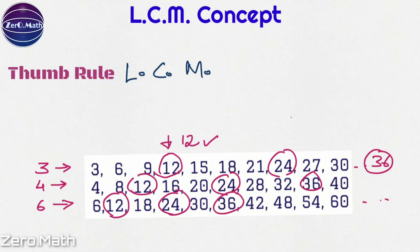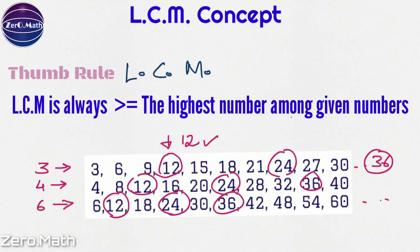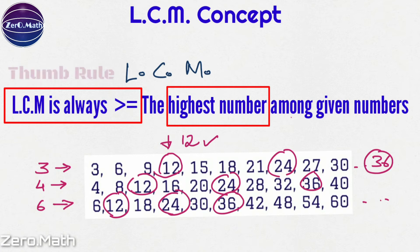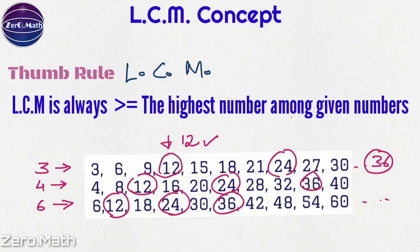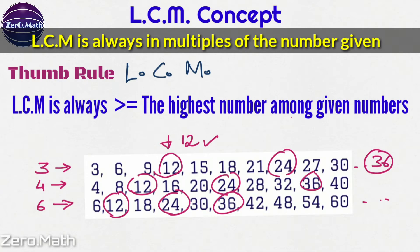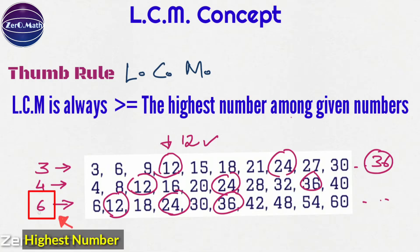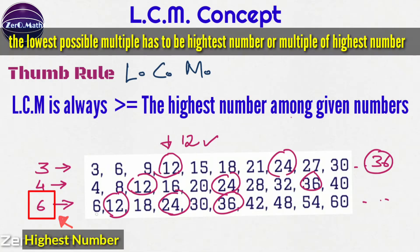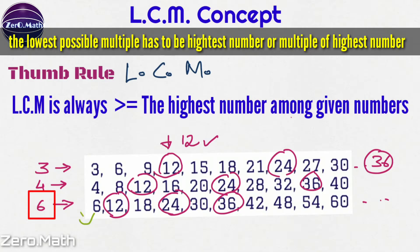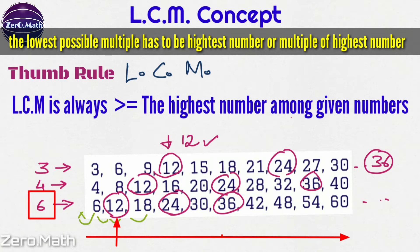Let's understand the thumb rule of LCM. The LCM is always greater than or equal to the highest number among the given numbers. The reason is the LCM is obtained by writing the multiplication table and identifying the lowest common multiple. For example, with 3, 4, and 6, the highest number is 6, so the LCM cannot be less than 6. In this case, the LCM is 12.